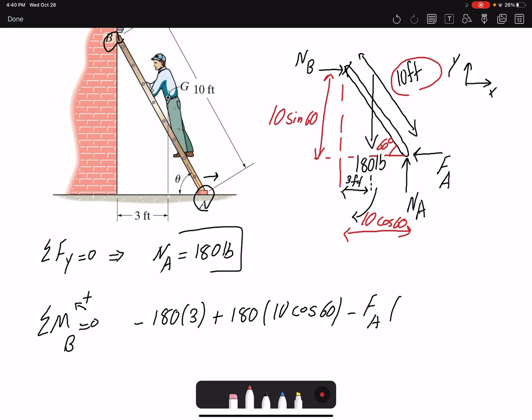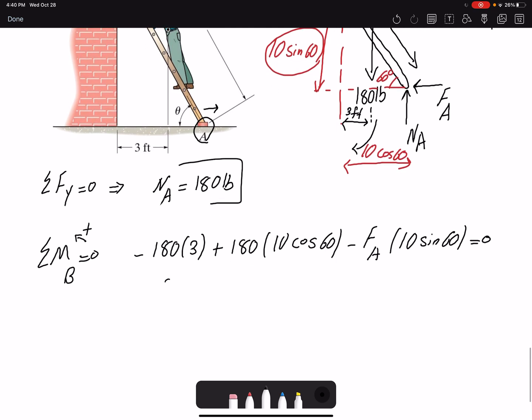That would be the moment arm for force FA. So I have one equation with one unknown. FA is unknown. I find the value for FA to be 41.56 pounds, and μ is simply FA over NA. I found both FA and NA, so that would be 0.23.